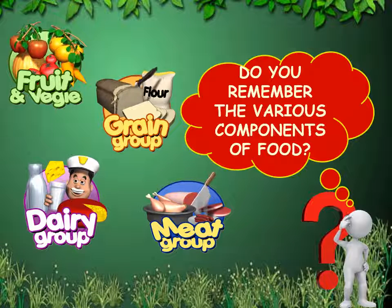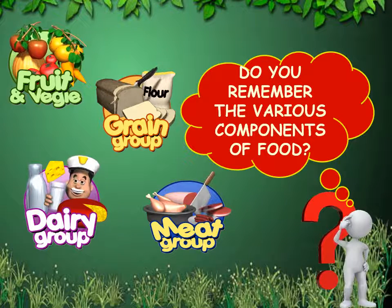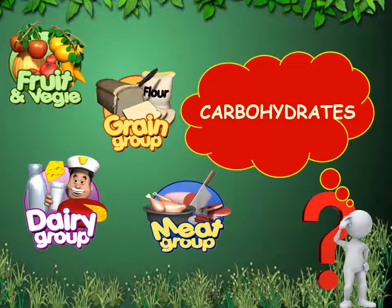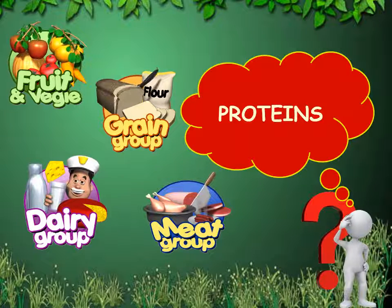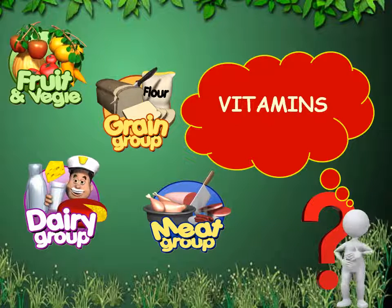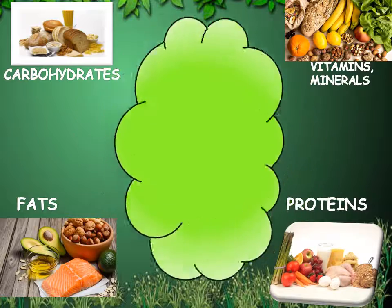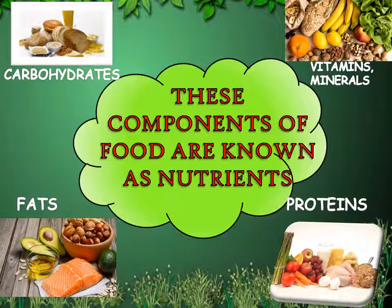Do you remember the various components of food? We have studied them in 6th class. Let's recall their names: carbohydrates, fats, proteins, vitamins, and minerals. The components of food are known as nutrients. So we can say that carbohydrates, fats, proteins, vitamins, and minerals are called nutrients.